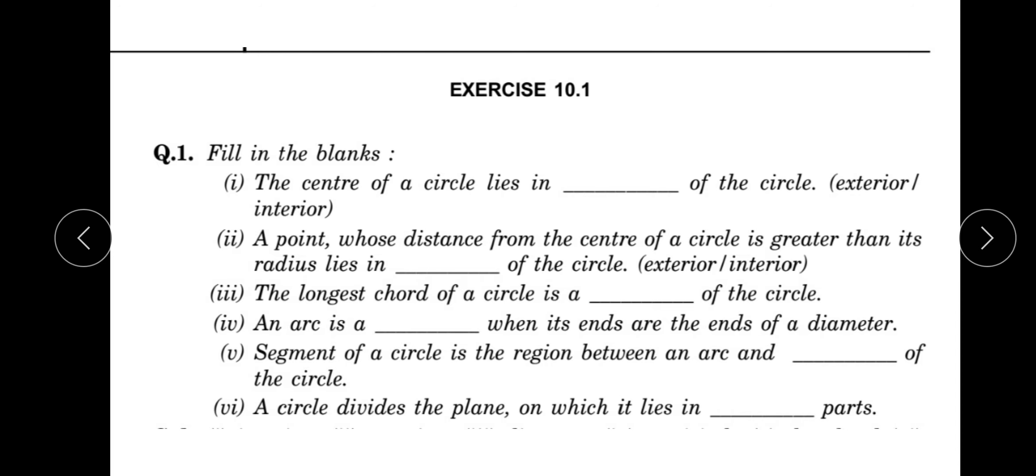The longest chord of the circle is a diameter of the circle. An arc is a semicircle when its ends are the ends of a diameter. A segment of a circle is the region between an arc and chord of the circle. A circle divides the plane on which it lies in three parts.